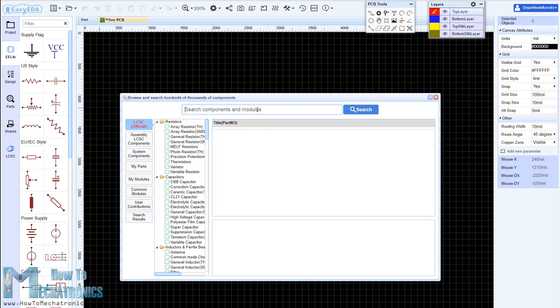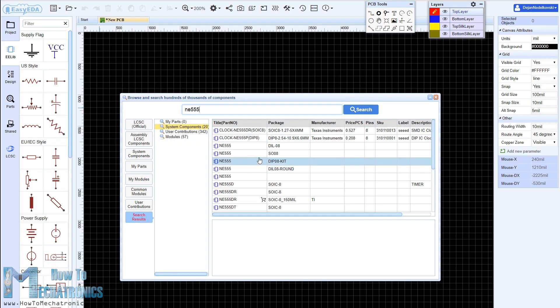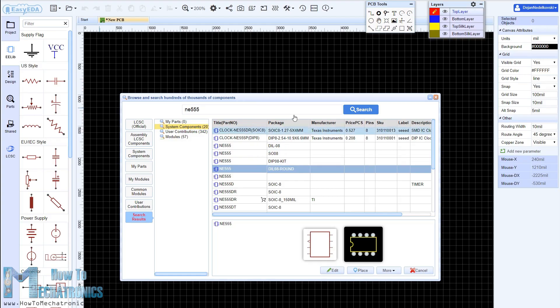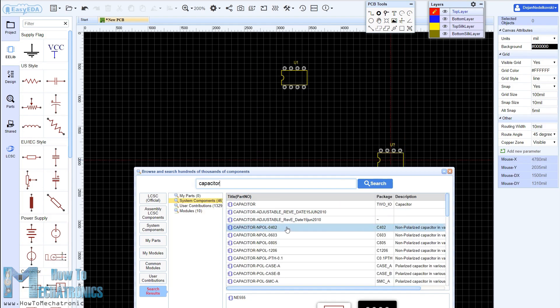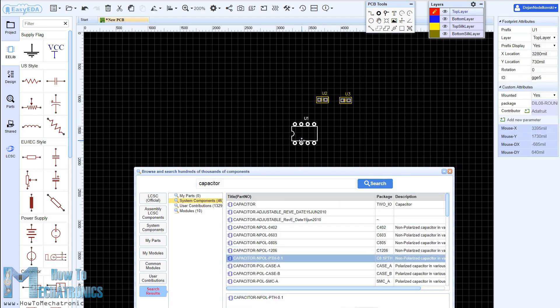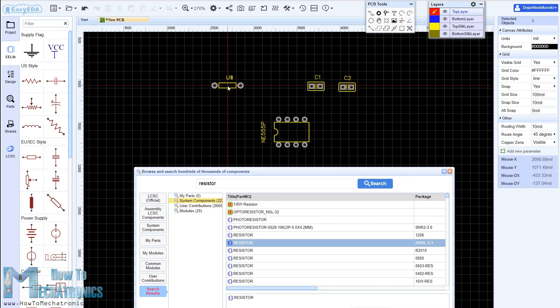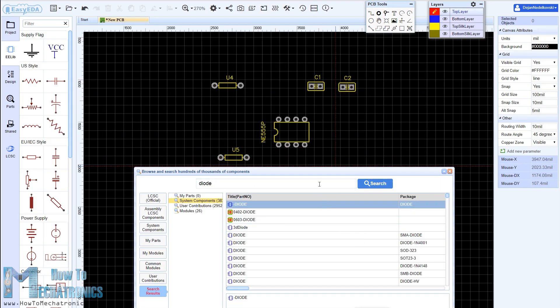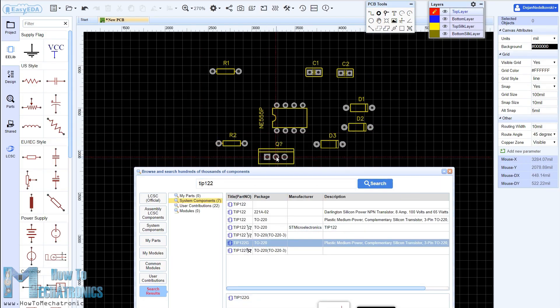For that purpose I will use the EasyEDA free online software. Here we can start by searching and placing the components onto the blank canvas. The library has hundreds of thousands of components, so I didn't have any problem finding all the required components for this PWM DC motor speed controller circuit.